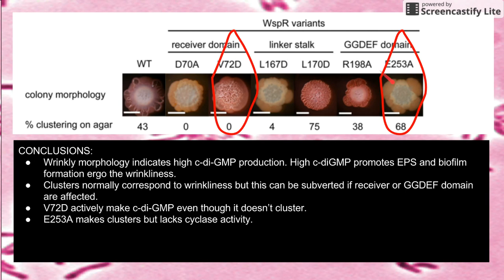The other exception is E253: this mutation affects WISP-R's ability to make CDGMP, so even if you get a whole bunch of clusters, it still just won't be able to make CDGMP. But other than these two exceptions, basically the more clusters we have, the more wrinkliness and the more biofilms being made inside the bacterium.